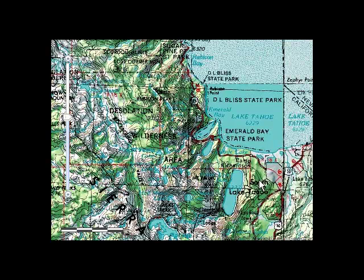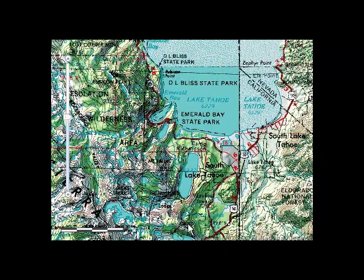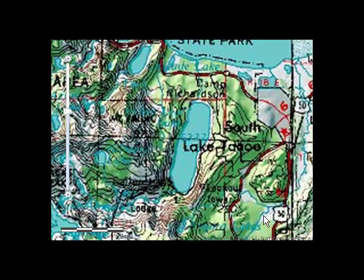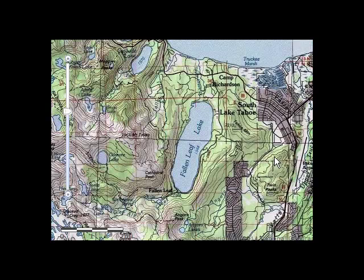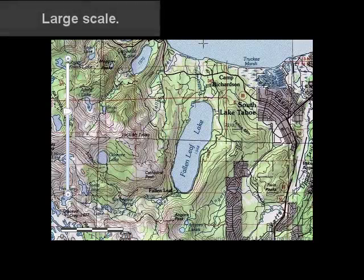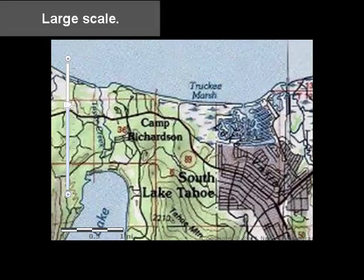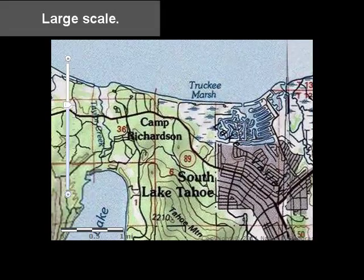Now, I'm seeing the 1 to 100,000 scale series as I zoom in to South Lake Tahoe. Let's zoom in there a little bit more. And as I keep zooming in, I'm seeing the 1 to 24,000 scale series right here on the California-Nevada border.